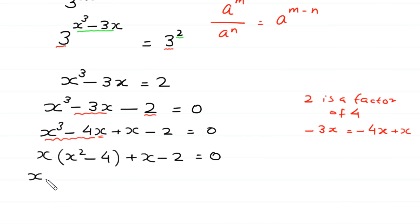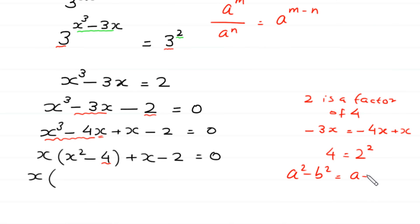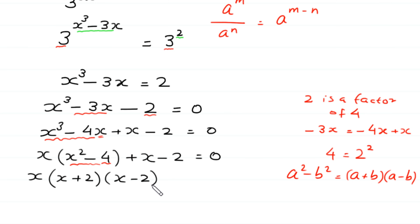From these two terms x cubed minus 4x, we can factor out x. Then x times x squared minus 4 plus x minus 2 equals 0. Now, since 4 is the same as 2 squared, according to the algebraic identity a squared minus b squared equals a plus b times a minus b, we can write x squared minus 4 as x plus 2 times x minus 2. From the terms x minus 2, we can factor out x minus 2.